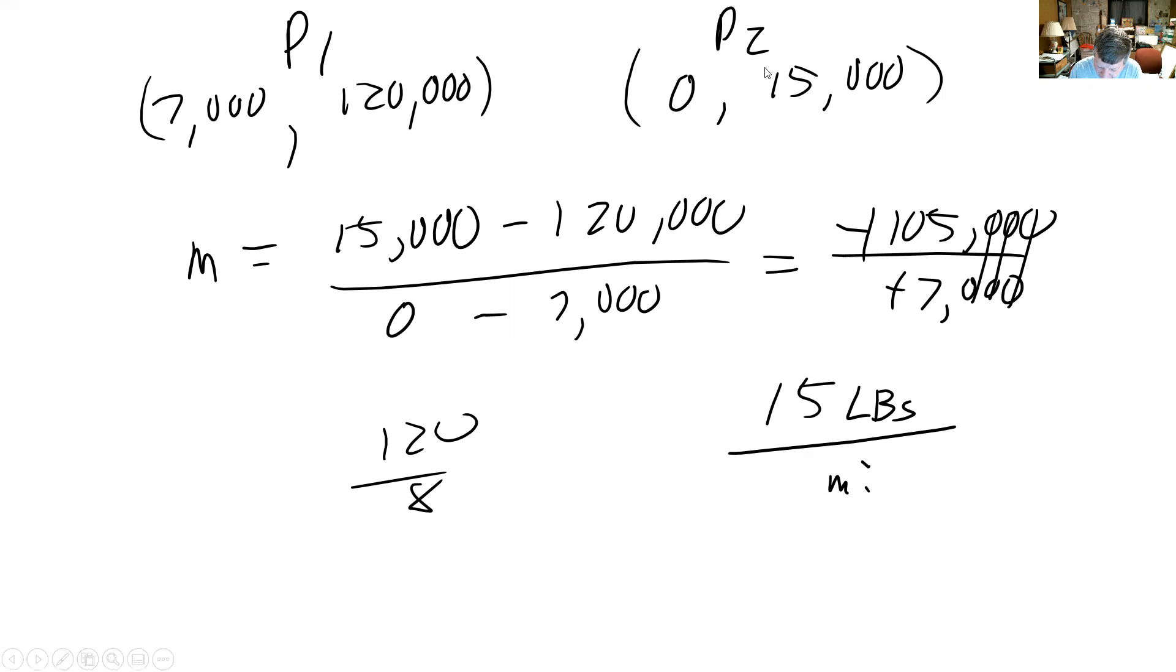What it should have been is (15,000, 0). Because the x value is 15,000, the y value is 0.